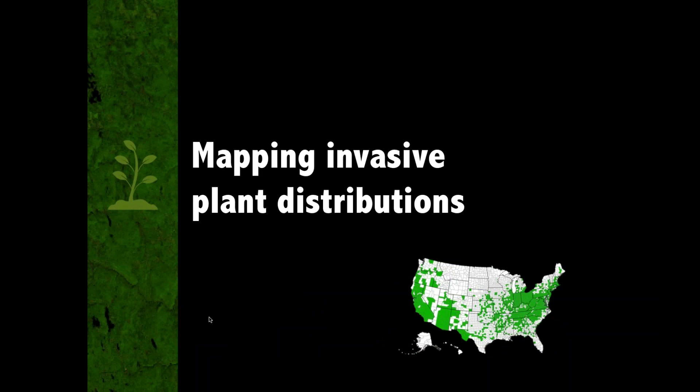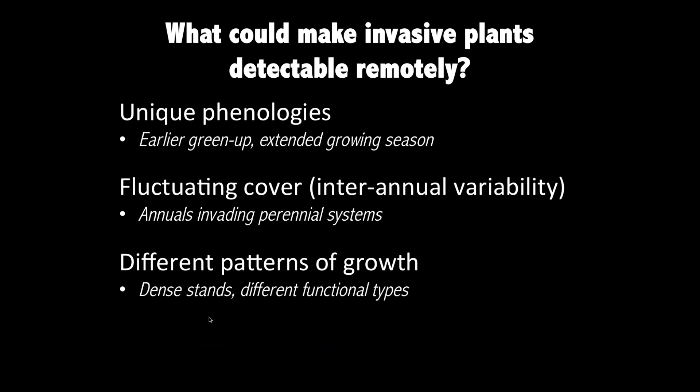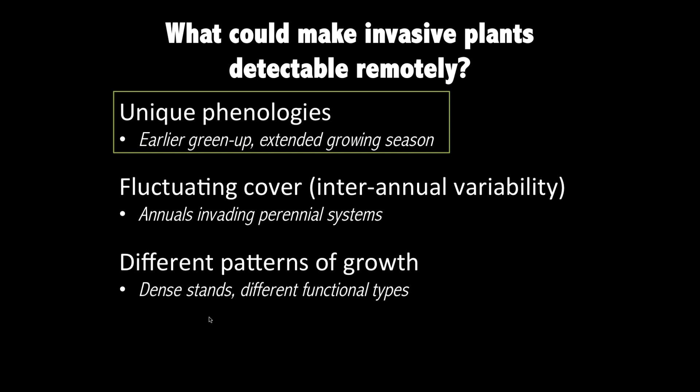Starting with mapping invasive plant distributions, there are a few ways remote sensing could detect invasive plants. The most interesting approach we're focused on is using unique phenologies — invasive species may have earlier green-up or an extended growing season. Other approaches include looking at fluctuating cover, where annuals invading a perennial system would show different spectral and temporal patterns, as well as different patterns of growth. Dense stands and different functional types will look different to remote sensing instruments. Our focus is on unique phenologies, though other approaches are of future interest.